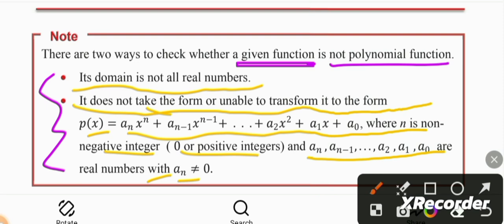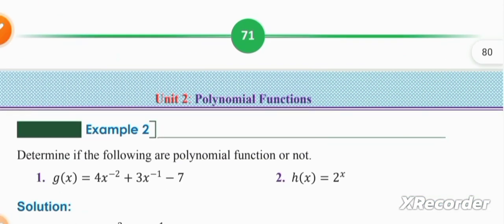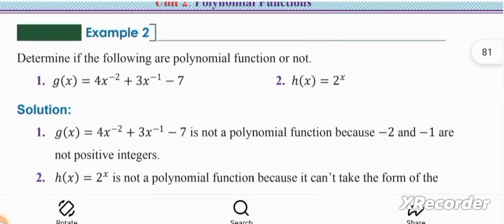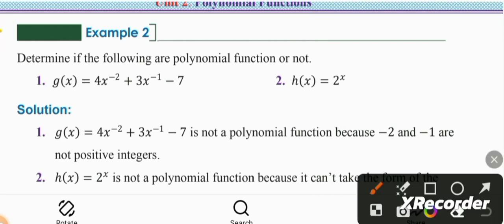In this form, you might want a P of x. A function P of x is different from another function under a certain condition. For example, if you have a polynomial function, it will satisfy the general form. What is this? Determine if the following are polynomial functions or not.